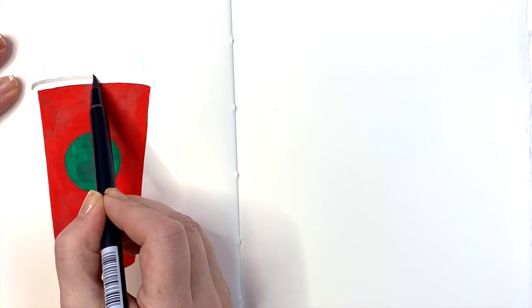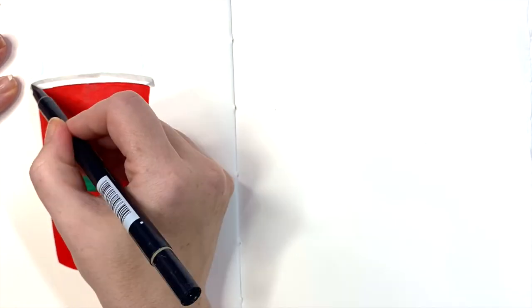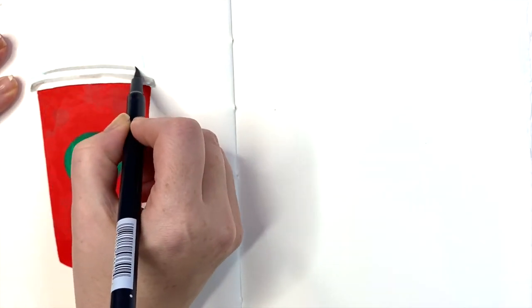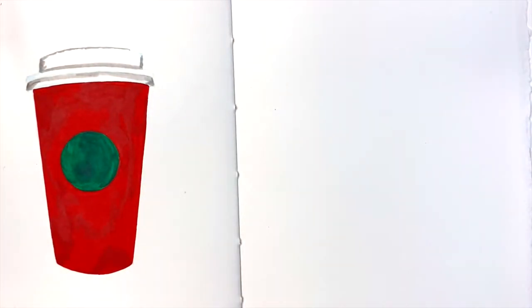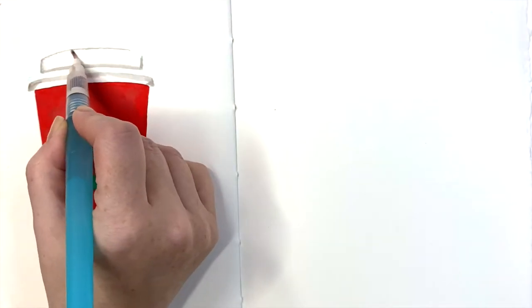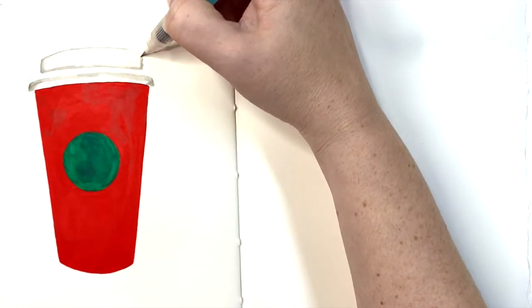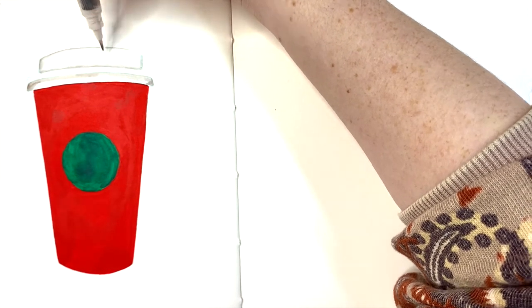Now I'm taking my Tombow. I'm drawing over some of those lines, just noting where I would want my shadows, which are on the edge and in those two middle lines. Then I'm taking a water brush, just blending that gray into the middle.